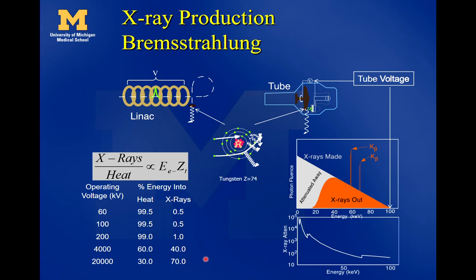Other departments may run differently — sometimes running the electron beam helps get all the other parts of the linac warmed up. And in a graph of x-ray production, the orange curve shows the x-rays that actually make it out of the x-ray tube versus the number actually produced. The tube voltage determines the maximum x-ray energy that can be made in the x-ray tube.